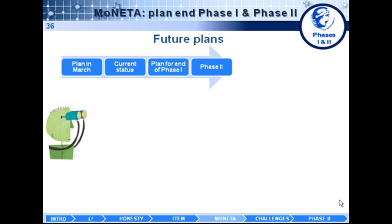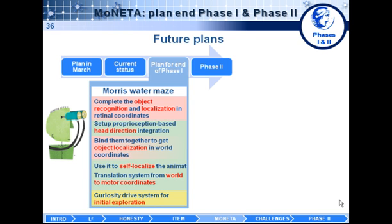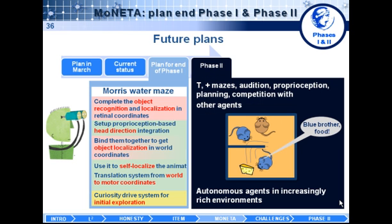For future planning, we have a series of steps already laid down to complete the brain for the Morris water maze — I invite you to come to the poster to get more details. The final goal for phase two is to simulate more complex mazes such as the T-maze, plus mazes, and other mazes typical of the rodent literature. We want to add things such as audition, proprioception, planning, and competition with other agents, with the goal of moving towards increasingly autonomous agents in more complex environments.